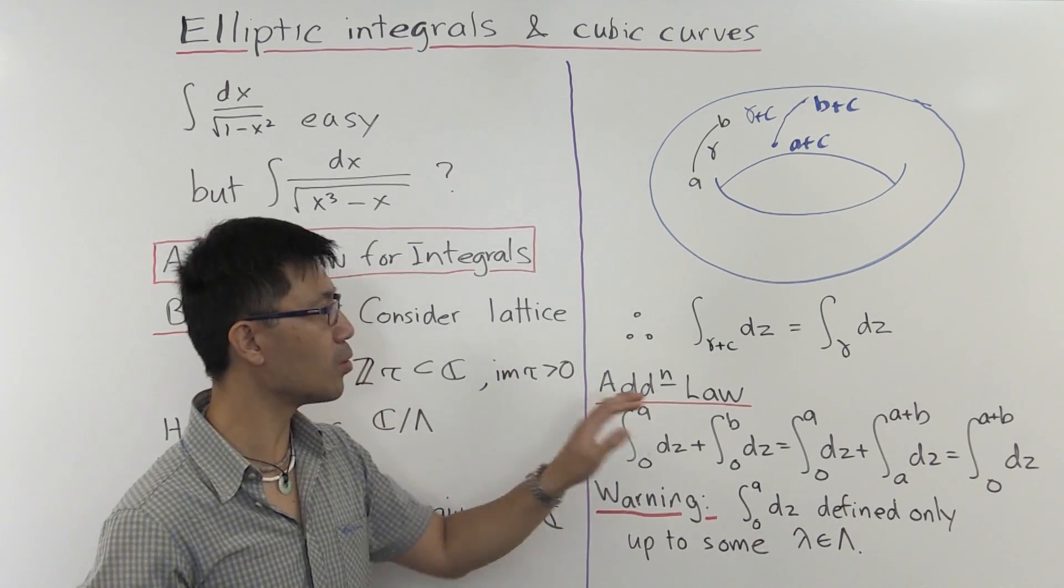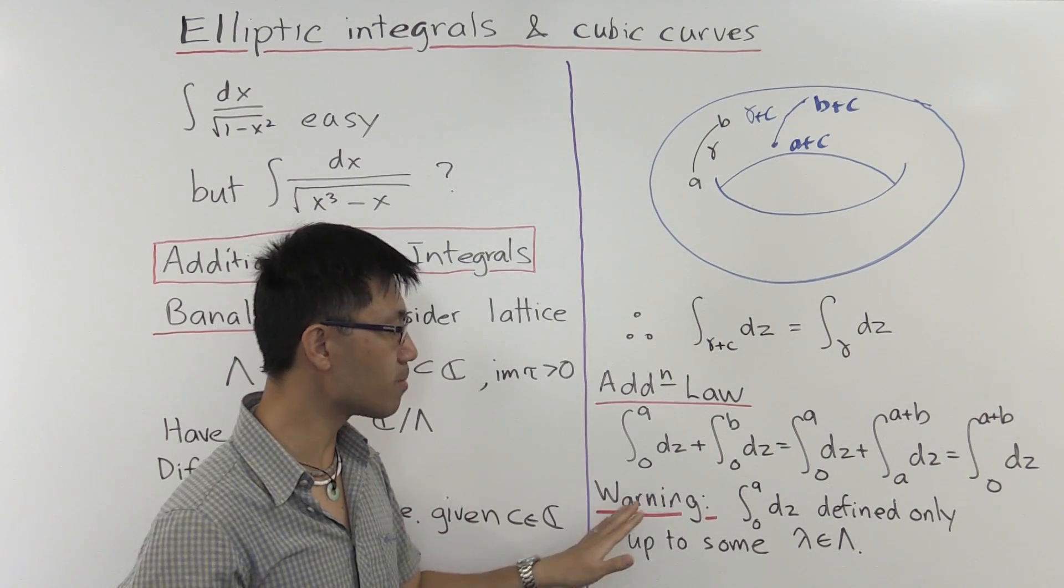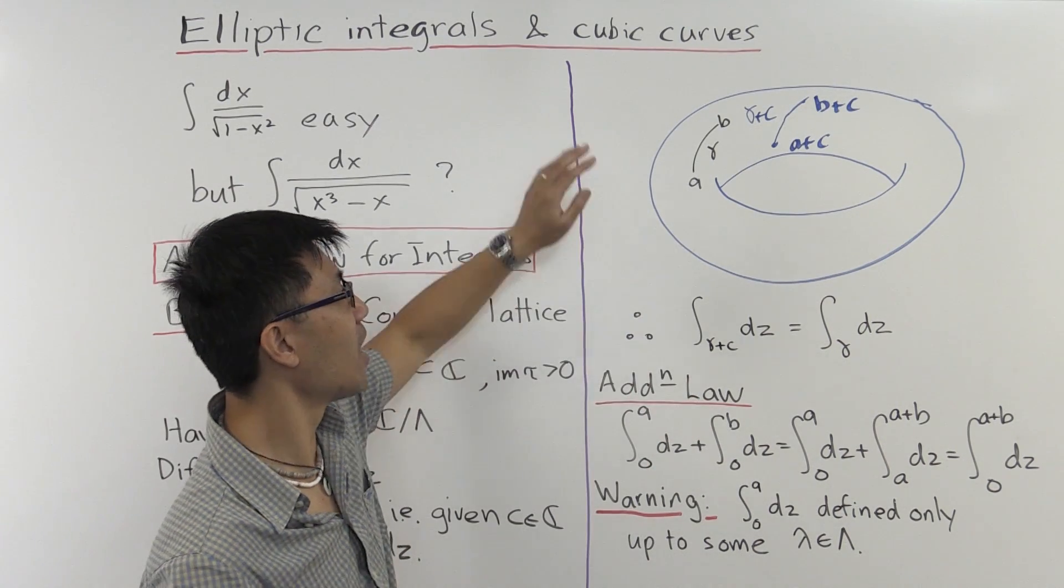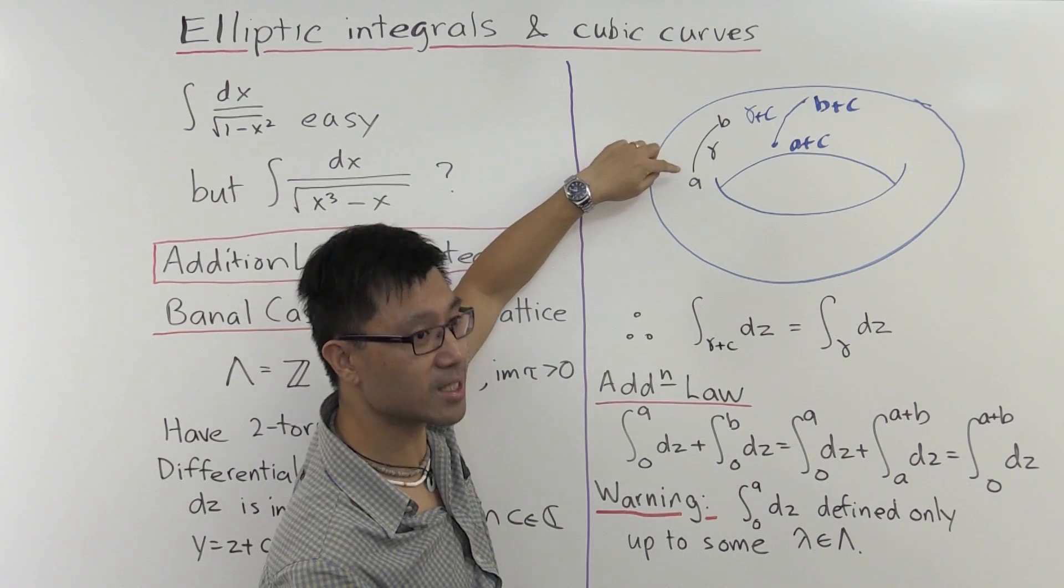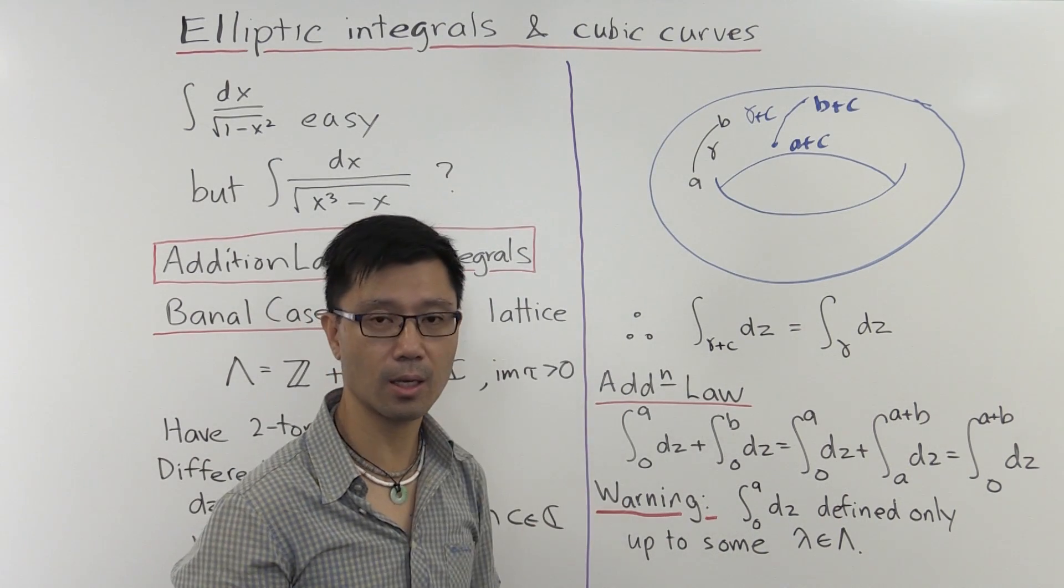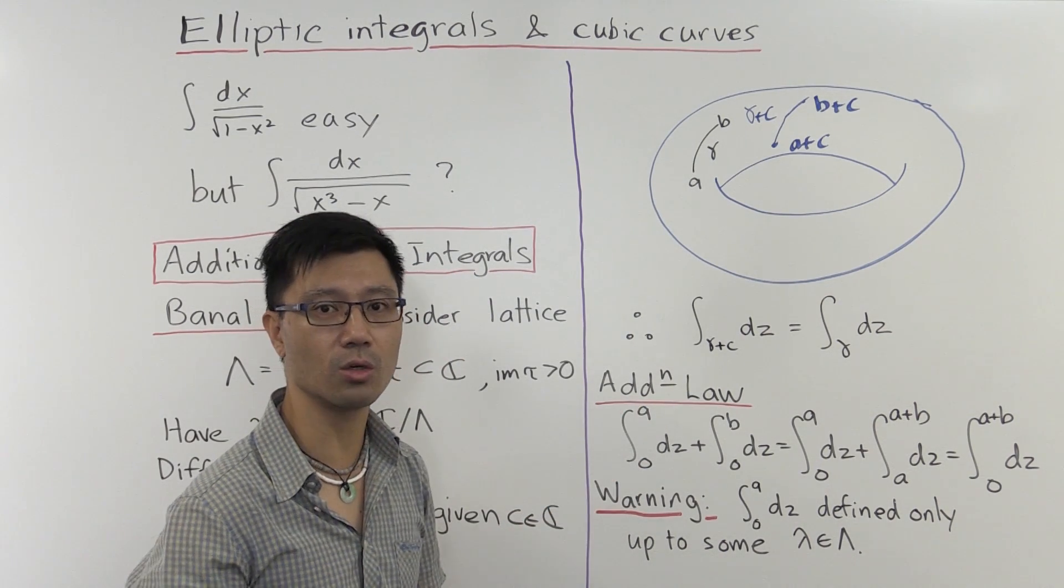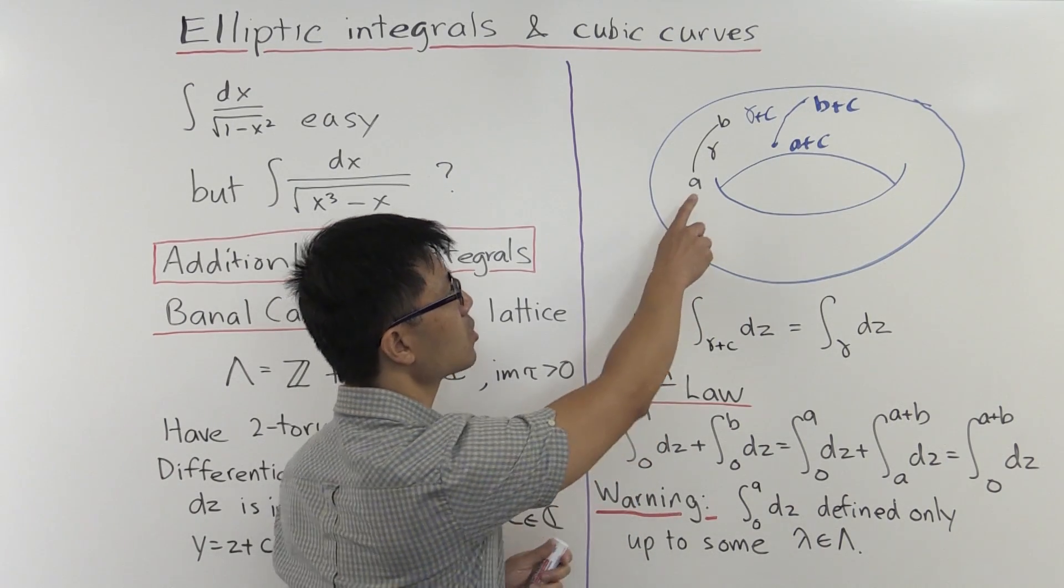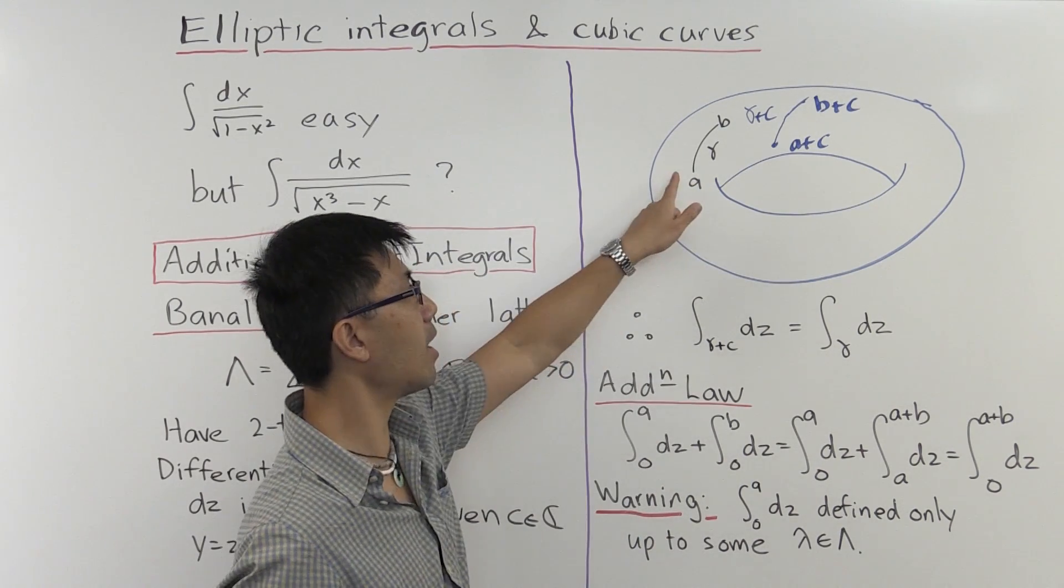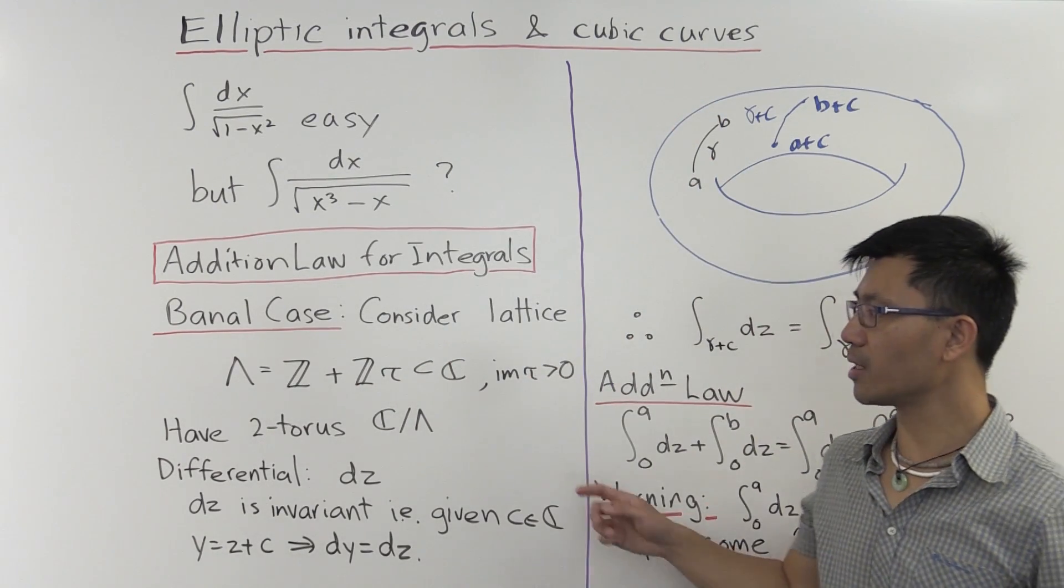Before I move on to the non-banal case, which is the cubic curves, and see how in that case you actually get an interesting theorem, let me just make one warning. We were a little bit naughty when we wrote this integral here. When you write an integral on some manifold, you really have to state the path that you integrate over. If you change the path, you'll get a different answer. So what happens if you change the path? Well, what's something that you can do? Well, one of the things that you can do is integrate along some path that goes back to itself, like a cycle, and then integrate along that path. And if you think about what that does, integrating along those cycles, the only answers that you can get are complex numbers which lie in this lattice Λ.